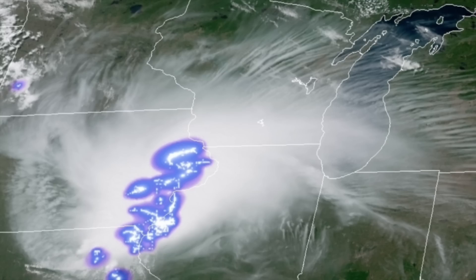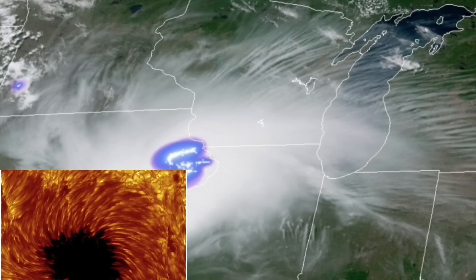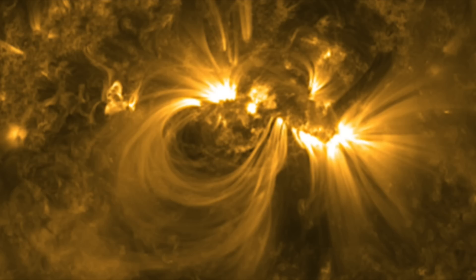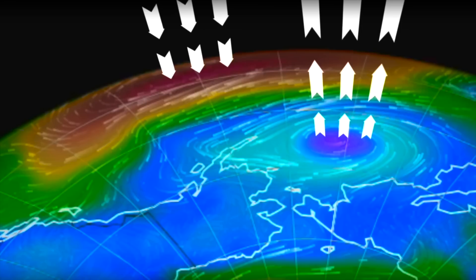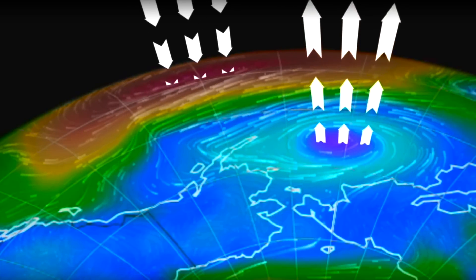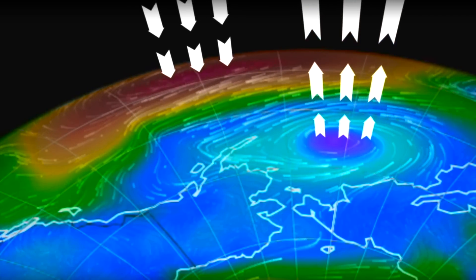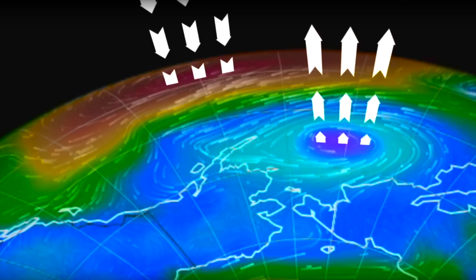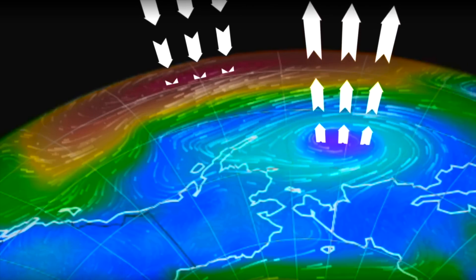The similarities are both in physical characteristics and in the energetic release, but there's more. On the Sun, the positive and negatively charged sunspots are connected by a circuit of magnetic arches. On Earth, it's the low- and high-pressure cells that are connected by the global electric circuit — sunspots and Earthspots.